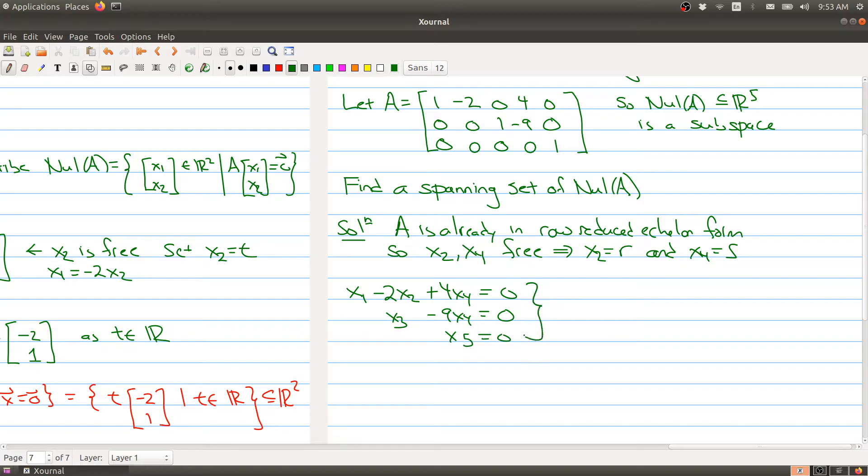We can use this information and rewrite things as x1, x3, and x5. These are our leading variables equal to 2x2 minus 4x4, 9x4, and zero. This becomes 2r minus 4s, 9s, and this still stays zero.